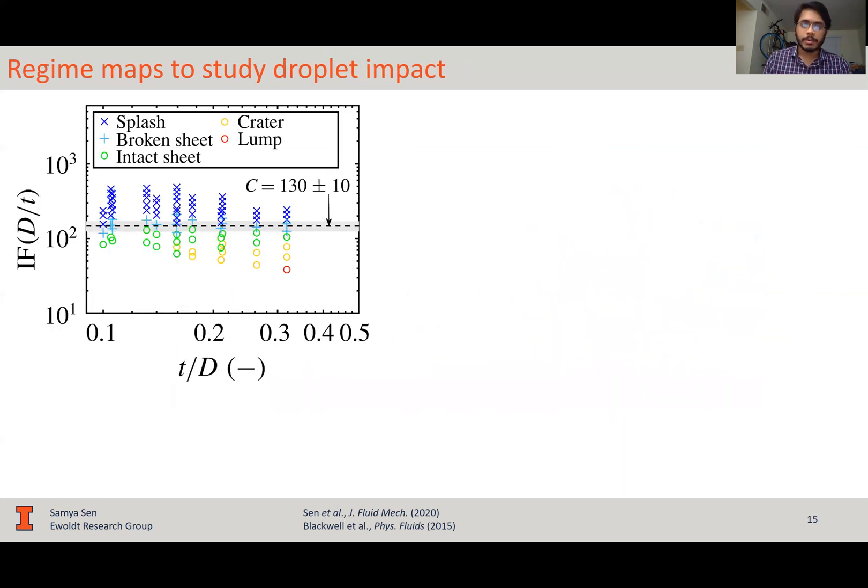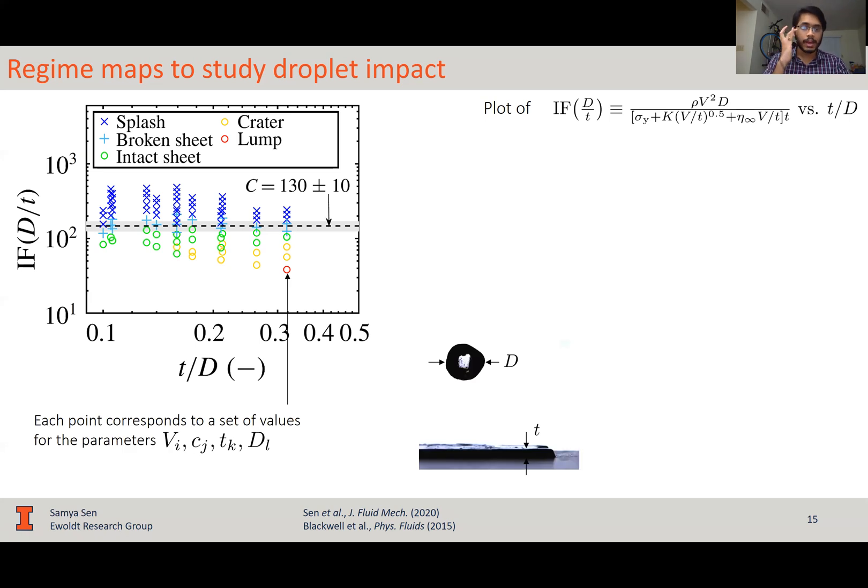So, before I jump into the drop impact regime maps, I have to clear out what this is. It's a plot of this dimensionless group versus the dimensionless coating thickness. Now, in this plot, I'm showing the results for 3.5% unaged laponite, where each point corresponds to a set of values for the parameters impact velocity, concentration, coating thickness, and drop diameter, d and t defined over here.